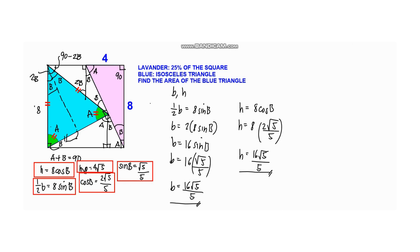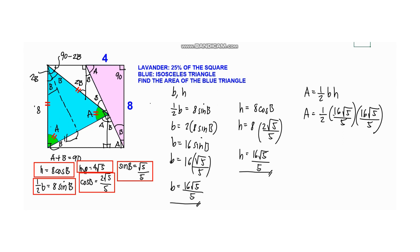For the final step, we can now find the area. The area equals one-half times the base times the height. Area equals one-half times 16 square root of 5 over 5 times 16 square root of 5 over 5. Canceling and simplifying: 16 divided by 2 equals 8, and 8 times 16 equals 128, all over 5. So the area equals 128 over 5 square units. That is our answer.